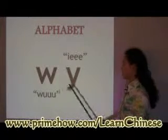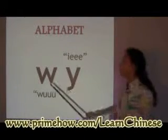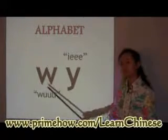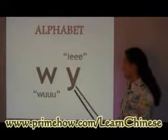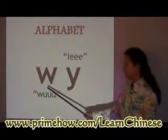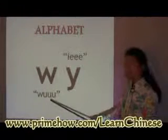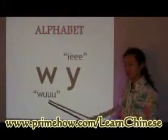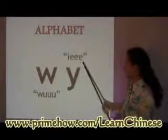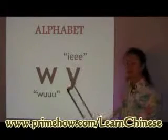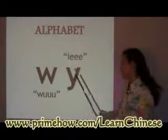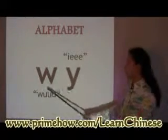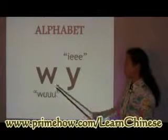And then W and Y. W sounds like 'wu' and Y sounds like 'ee' — almost like you're going to say 'eek' but without the K sound. So: ee, wu, ee.